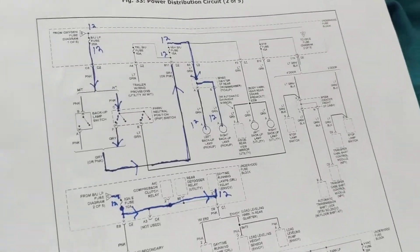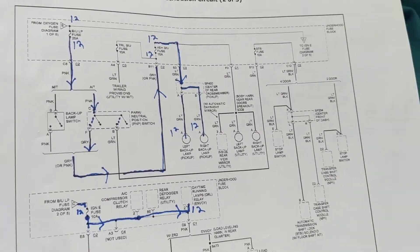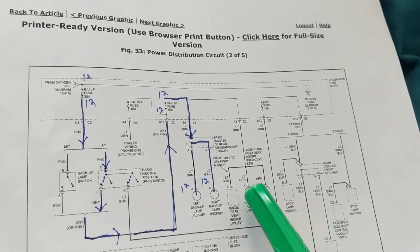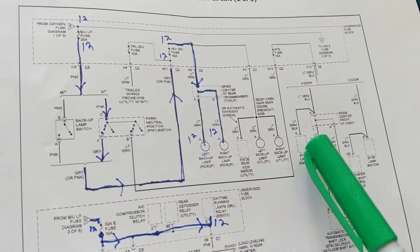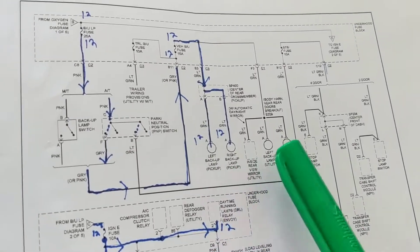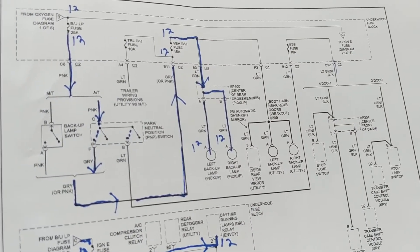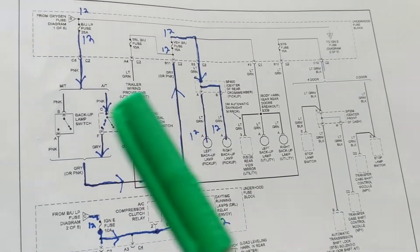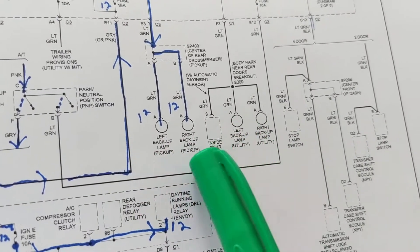Hello once again. I'm looking for a fuse — I have a problem with the backup lights. Instead of looking through 20 different schematic pages, I come to the power distribution circuit. When you come to certain areas of these schematics, sometimes they cover one or two models, so you have to be aware of which line you're following, and also whether it's manual or automatic transmission, since those have different lines.